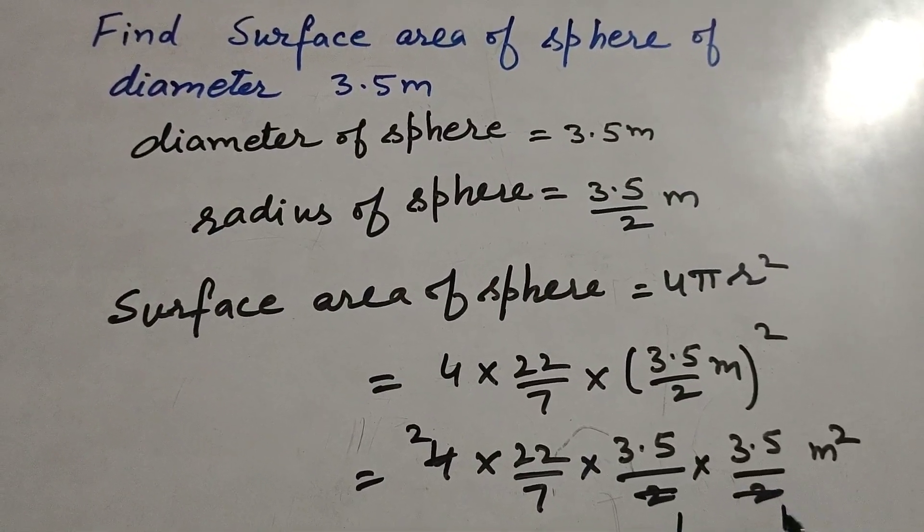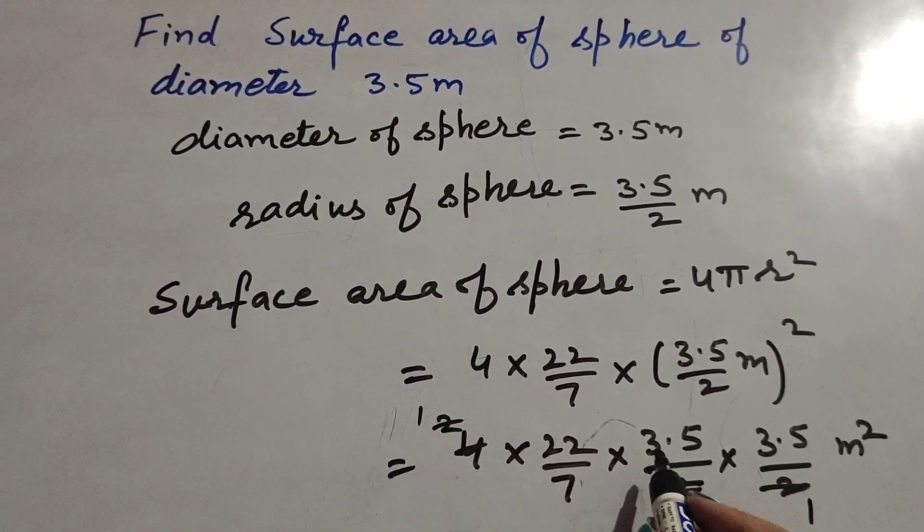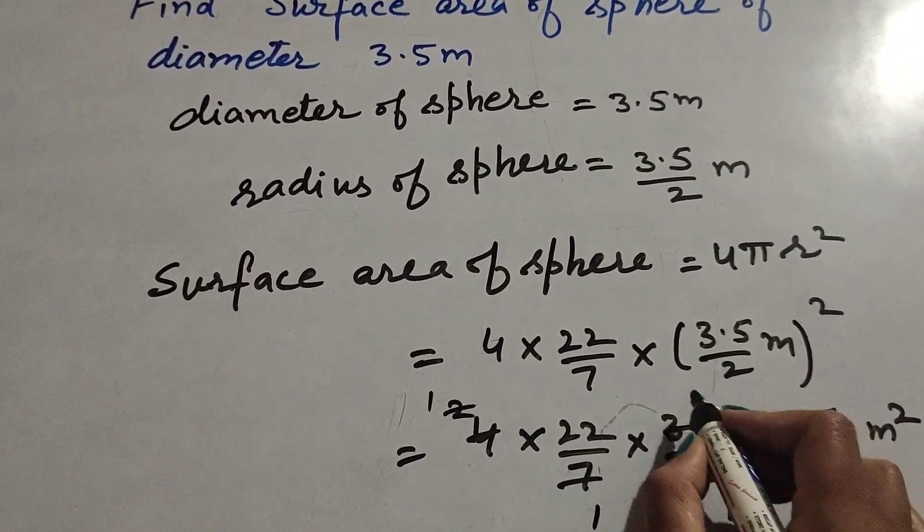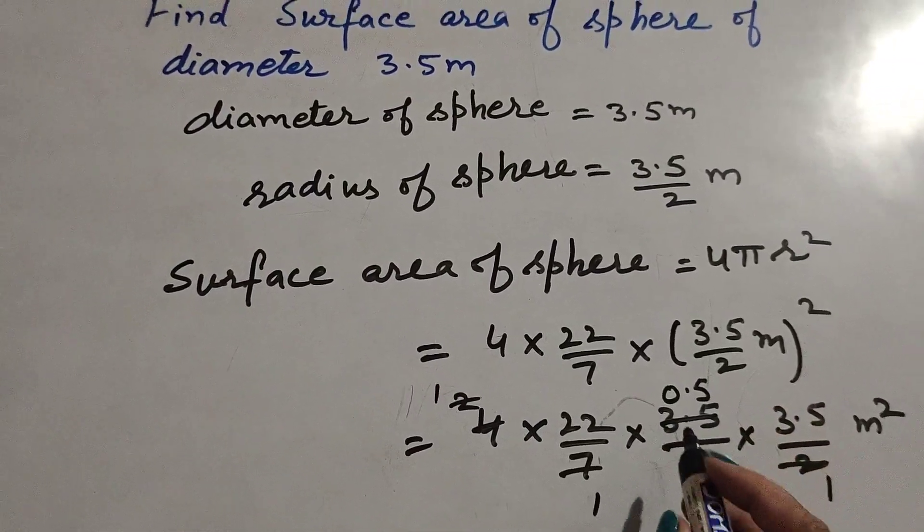So we cancel them. 1, 2 ones are 2, 2 ones are 2. 3.5 is divisible by 7, so 7 ones are 7, 0.5, 7s are 3.5.